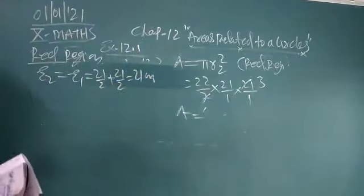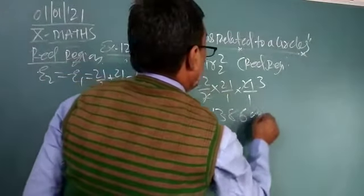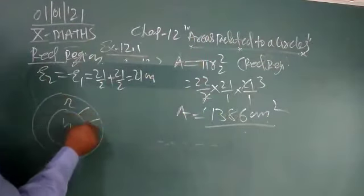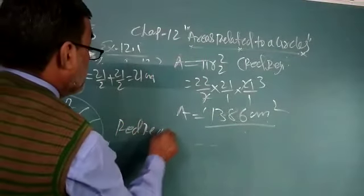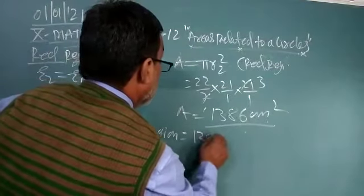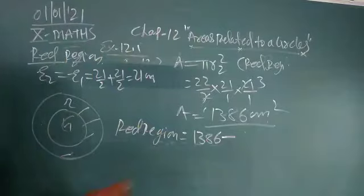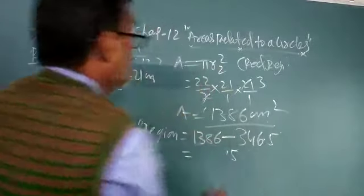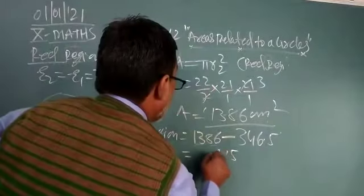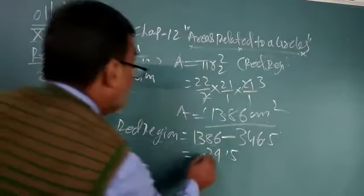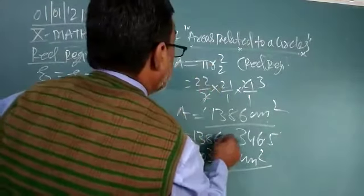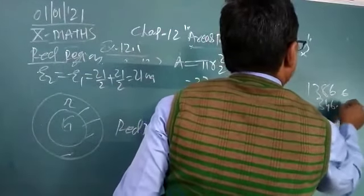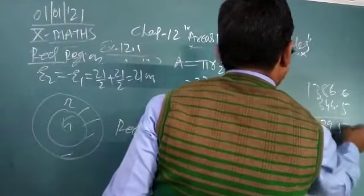So what is the region? This is the gold, this is the red between these two. So red region equal to 1386 minus gold region, gold region is 346.5. So what is the difference? 1386 minus 346.5, you obtain 1039.5. So this is the red region.